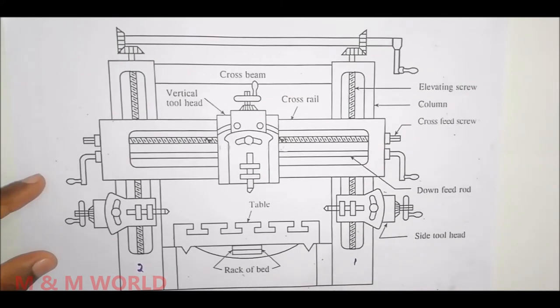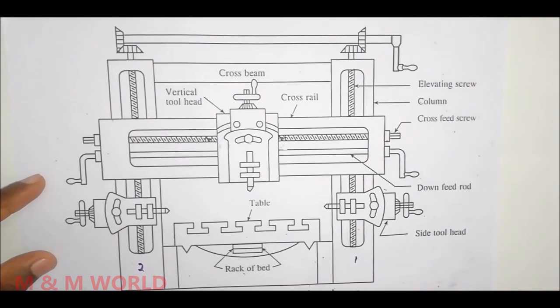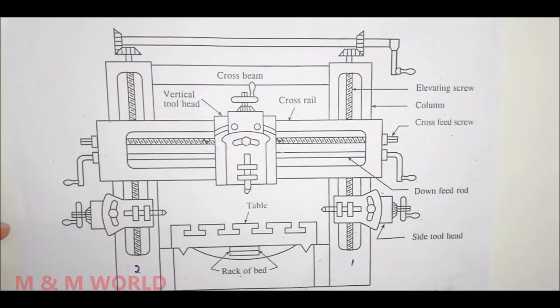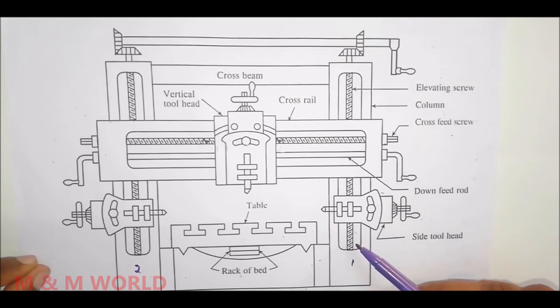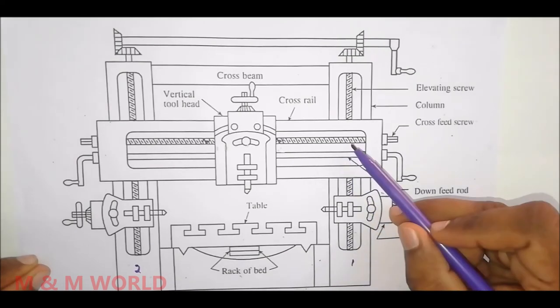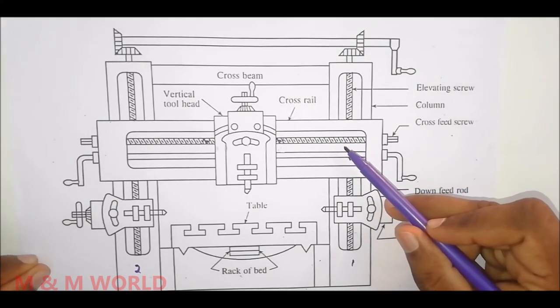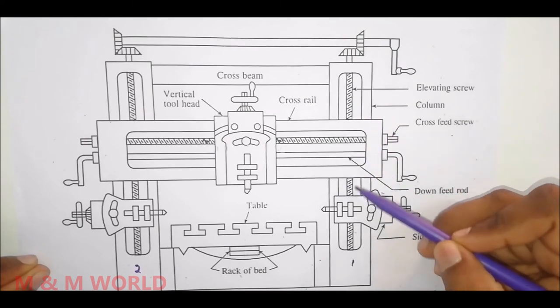The housings are placed on each side of the bed and they are heavily ribbed to resist severe forces due to cutting. The front face of each housing is accurately machined to provide precision guideways for the movement of the cross rail.